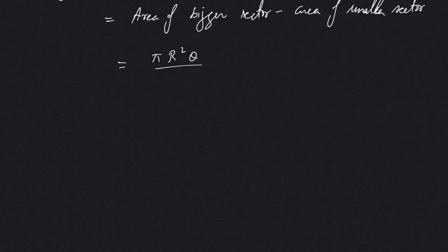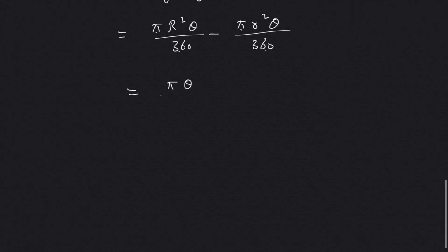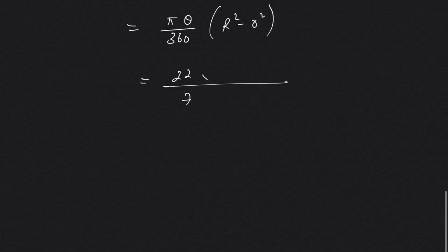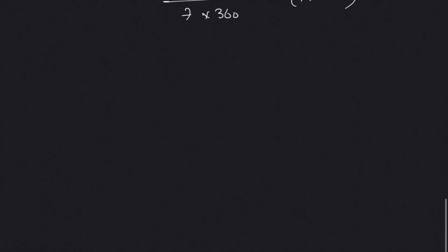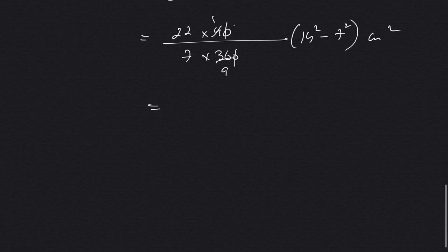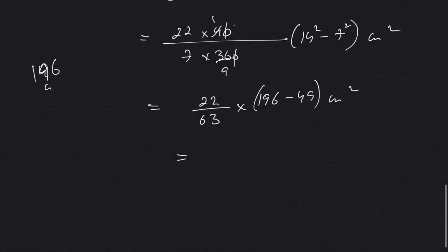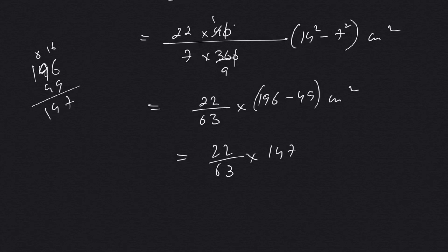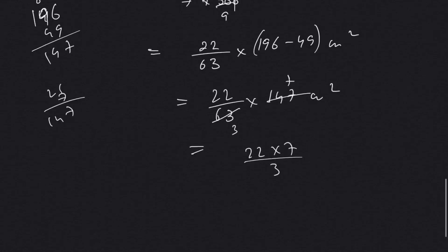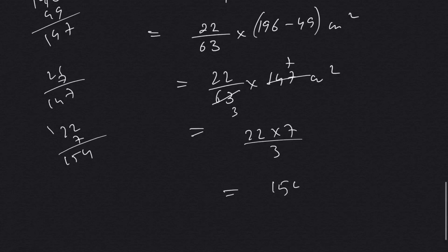The formula gives us: πR²θ/360 − πr²θ/360. Since π, θ, and 360 are common, we factor them out: (πθ/360)(R² − r²). Substituting values: (22/7) × (40/360) × (14² − 7²) = (22/7) × (1/9) × (196 − 49) = (22/7) × (1/9) × 147. Simplifying: 22 × 7/3 = 154/3 centimeters squared.